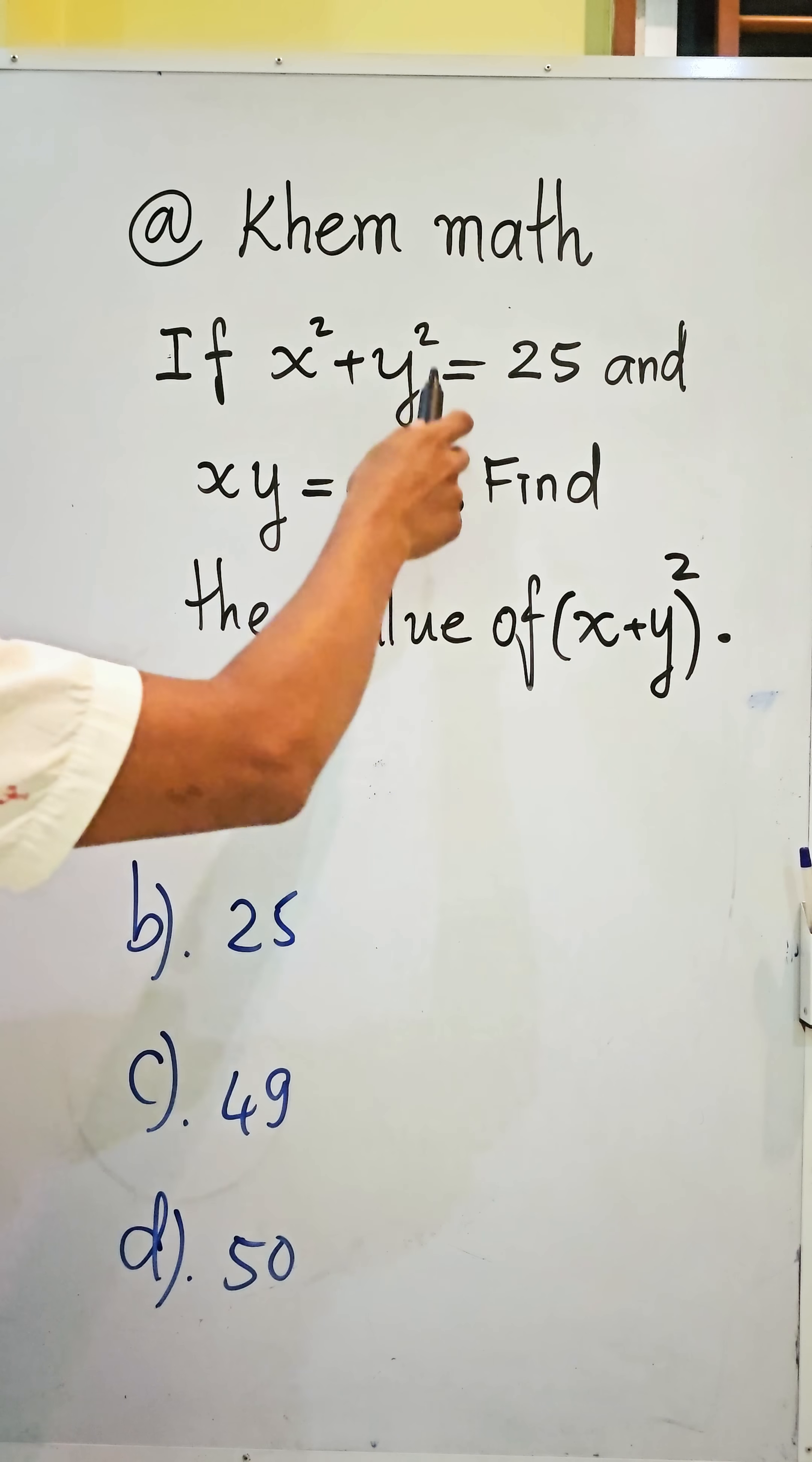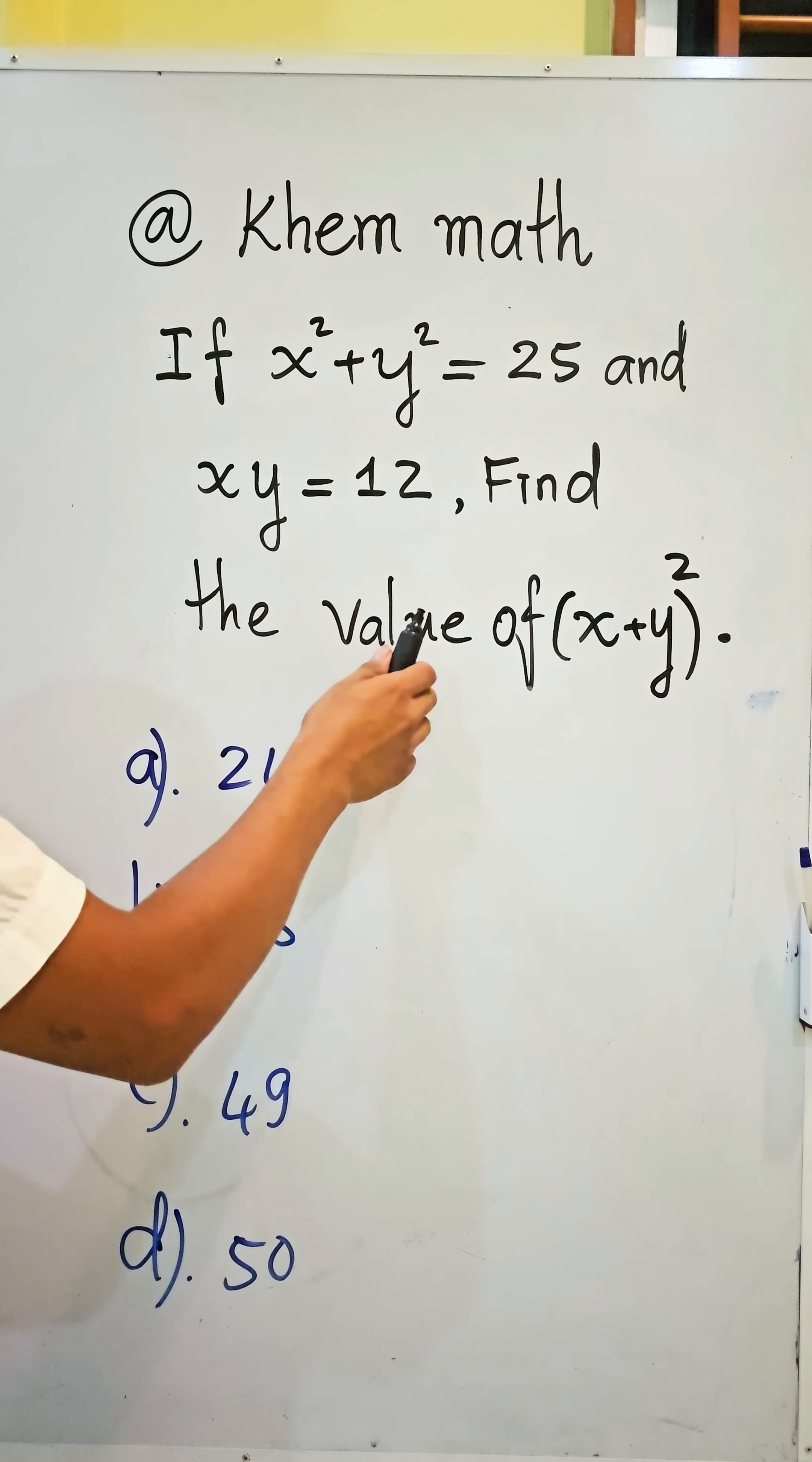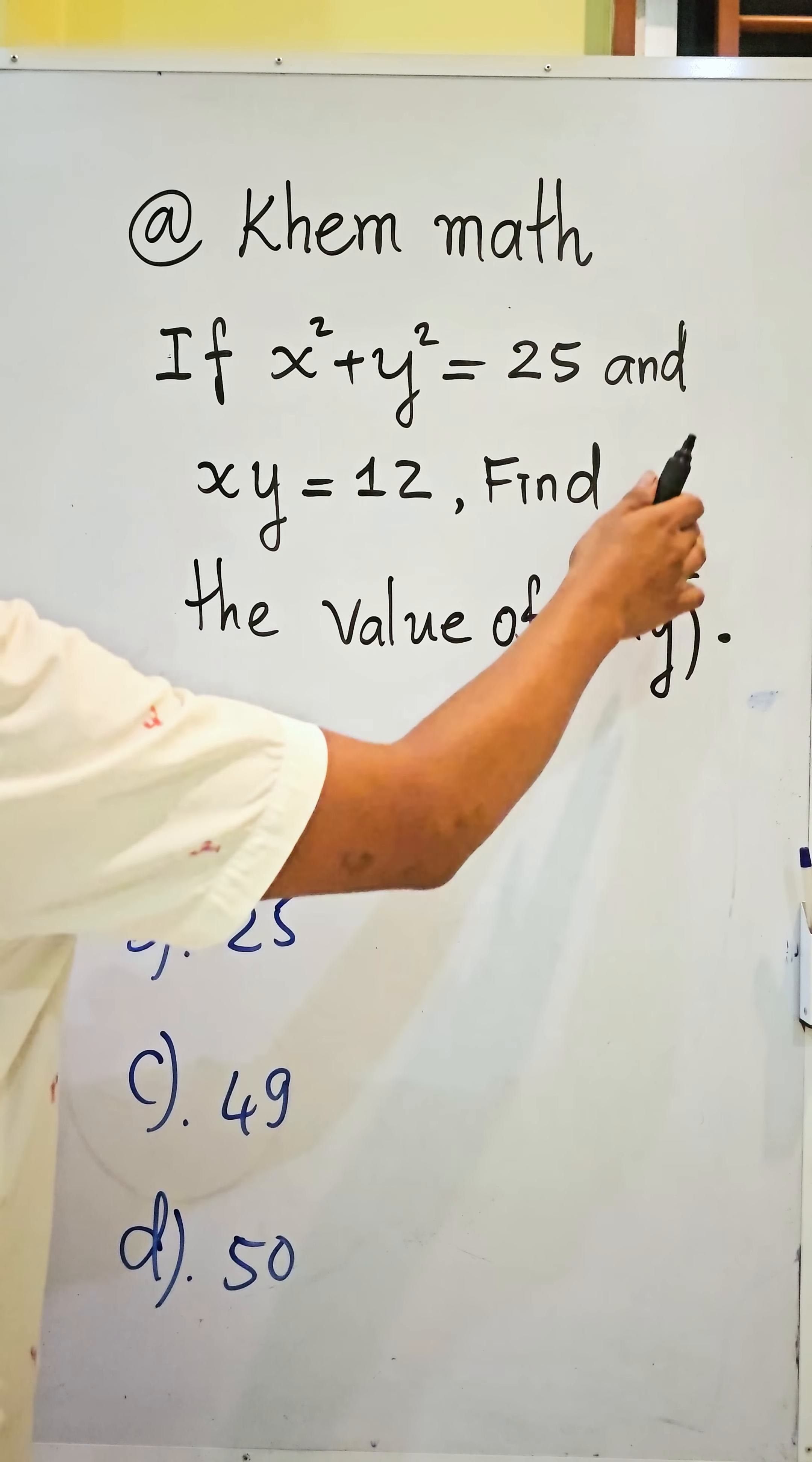If x squared plus y squared equals 25 and x times y equals 12, find the value of x plus y all squared.